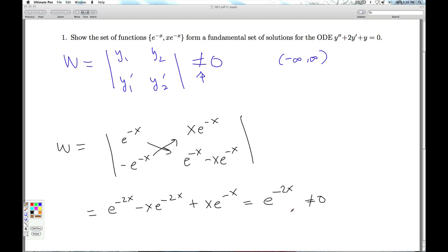In fact, as the theorem tells us, since these are both solutions to the same linear homogeneous ODE, in fact, it's not zero anywhere. So it's non-zero for all real numbers. And so this means that we are linearly independent.